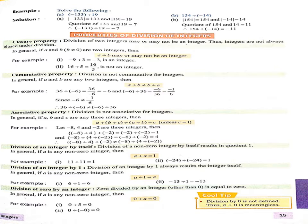Now next property is our associative property. Division is not associative for integers. In this property, बेटा, अगर हमारे पास 3 digits हैं A, B, C — अगर हम पहले B और C को divide करके A से divide करते हैं, और दूसरी condition में A और B को divide करके फिर C से divide करते हैं — तो both conditions are not equal.